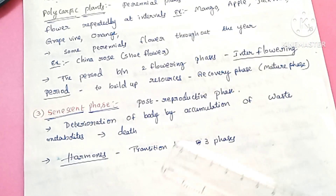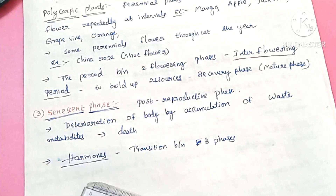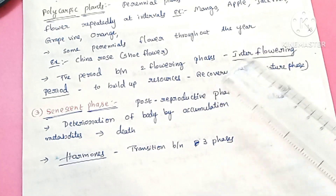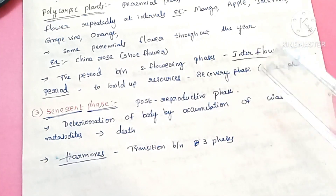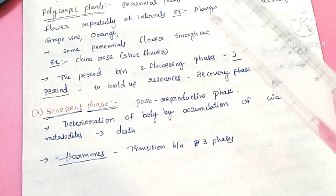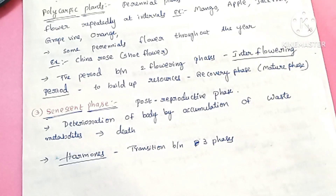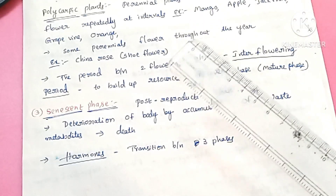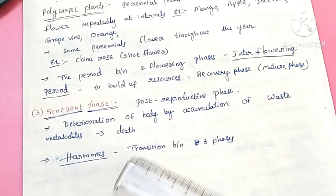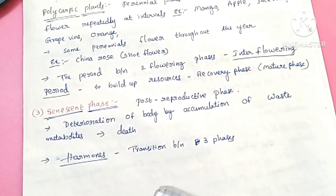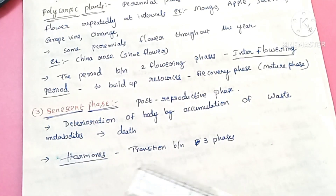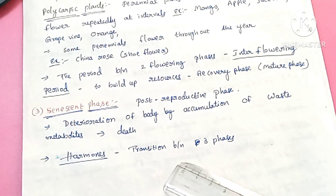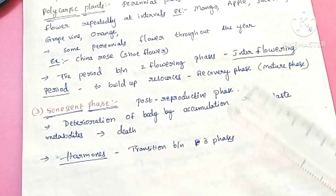Hormones are responsible for these transitions — not only in plants but in animals as well. From every phase, the transitions occur, and hormones are responsible for all these transitions. In plants, these hormones are called phytohormones.